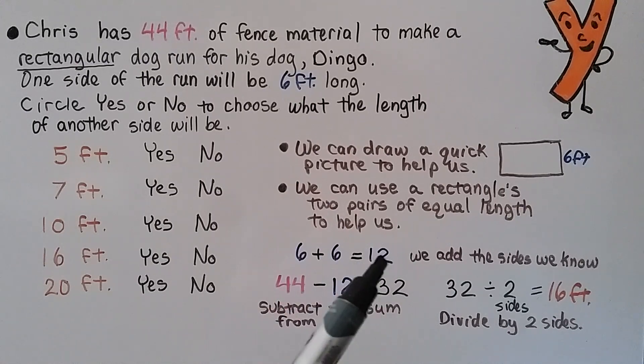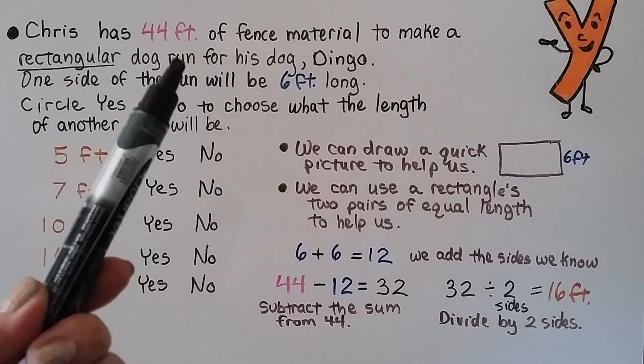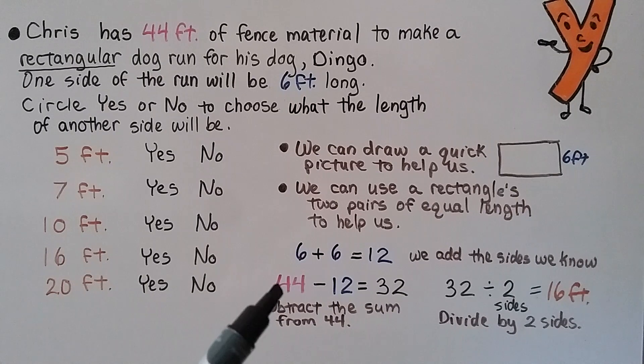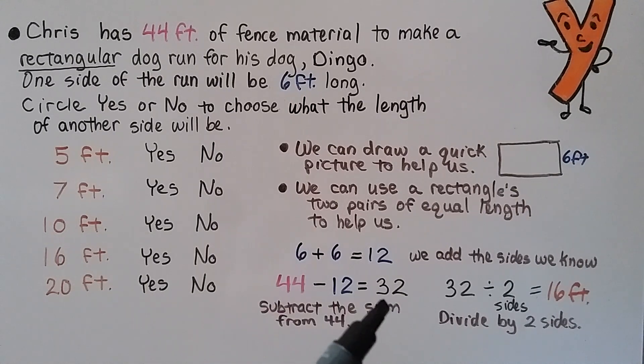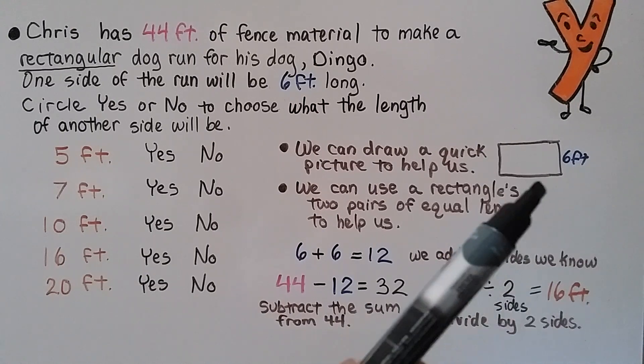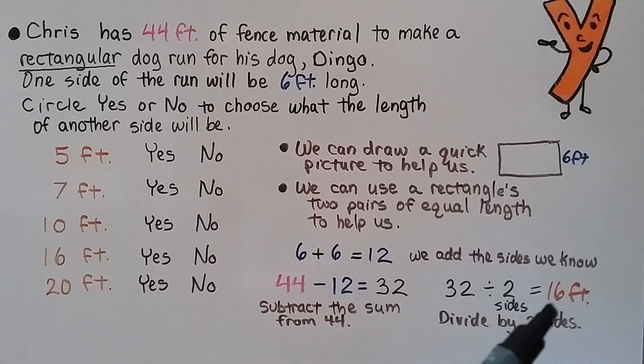We also know that he's got 44 feet of fence material. We can do 44 minus the 12 and that will equal 32. We subtract the sum, that 12, from the 44. So now we have 32. We divide this 32 by the other two sides, this side and this side. And 32 divided by 2 equals 16. So we know that another side length can be 16. And we look, yes, 16 is a yes.